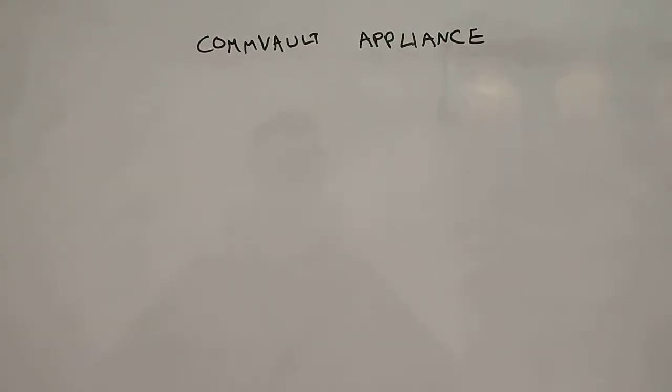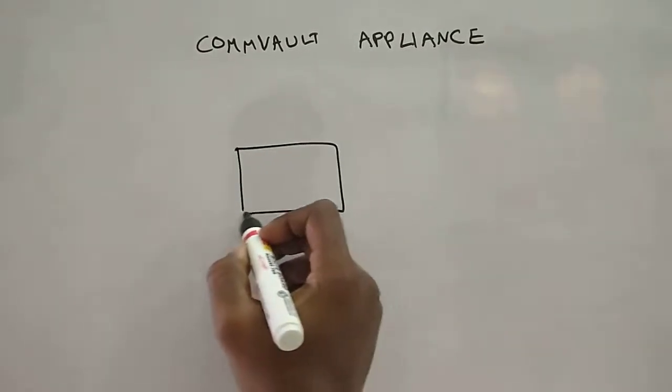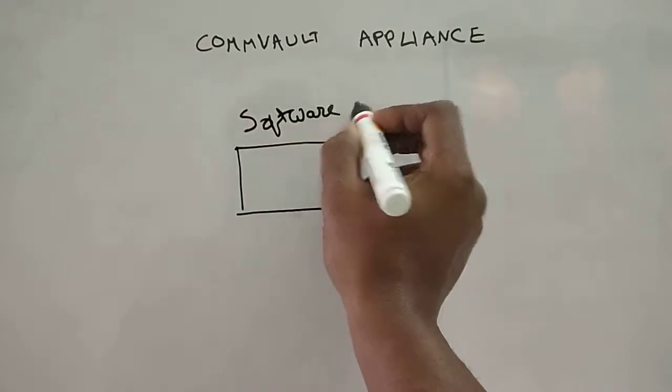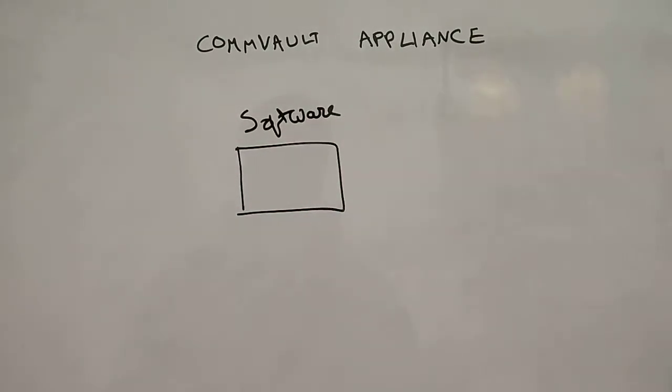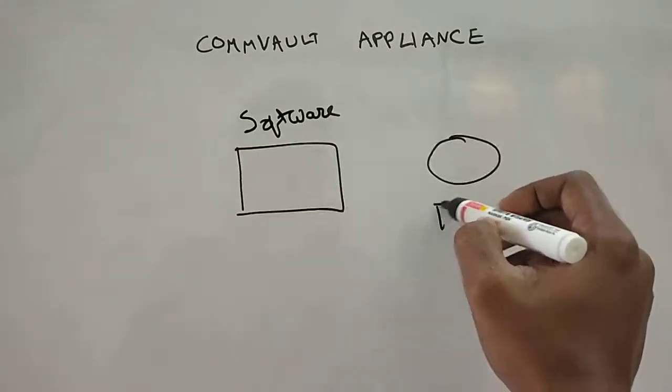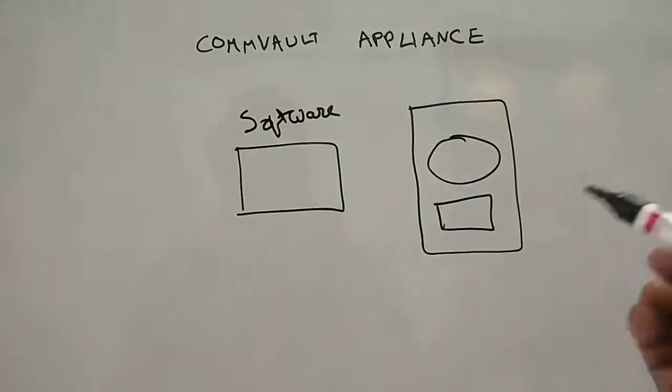We'll first discuss what appliances are. We know that Commvault is a backup software. Whenever you buy a backup software, it's presumably said that they don't give storage. You'll have to buy disks or tape separately which is from another vendor.